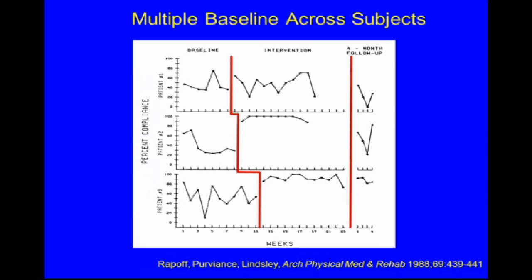This is a multiple baseline across subjects with three patients with arthritis, looking at their adherence to medications. The first patient had a combination of educational and behavioral strategies introduced, but there was not much of an increase. Patient two had the intervention introduced after a period of time, and adherence did increase. It also increased for the third patient and stabilized during the intervention phase. At a four-month follow-up, patient one showed a drop, while patients two and three did much better. We concluded the intervention was not effective for patient one, a teenager with other difficulties, while the two younger children did well.